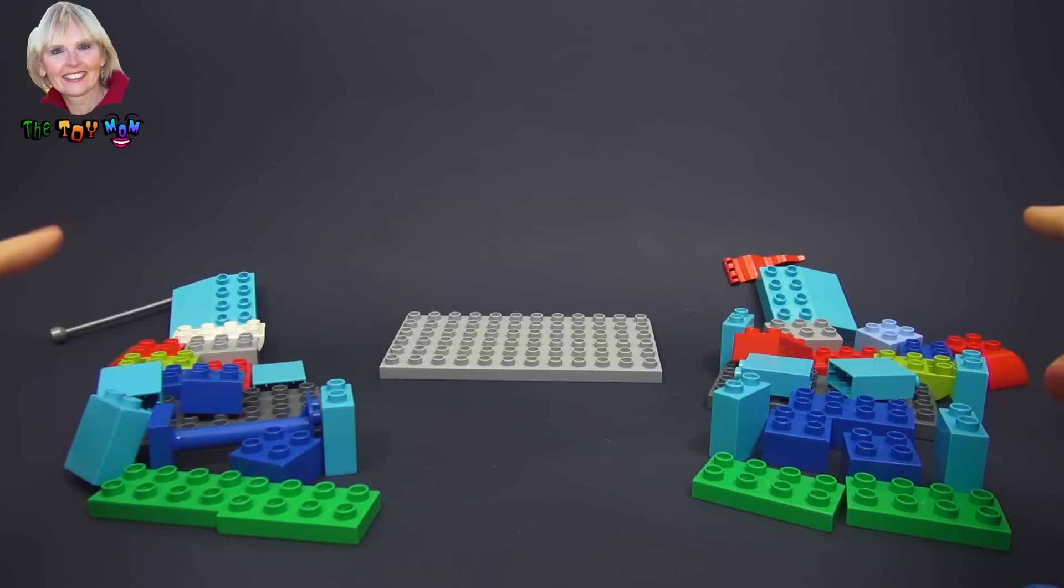Once I have the hangar done, we'll introduce you to the characters that come with this set, which is Skipper and, of course, Dusty. So let's get started in building them a hangar.